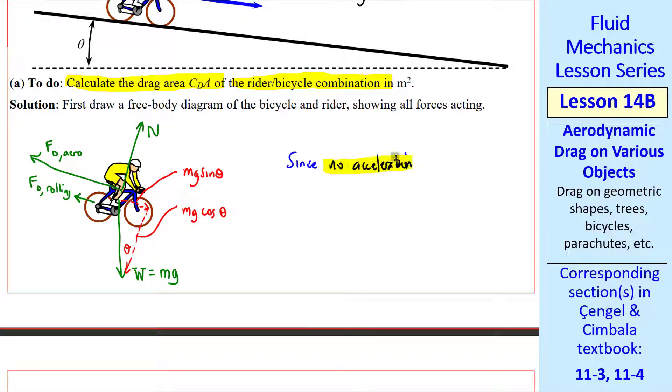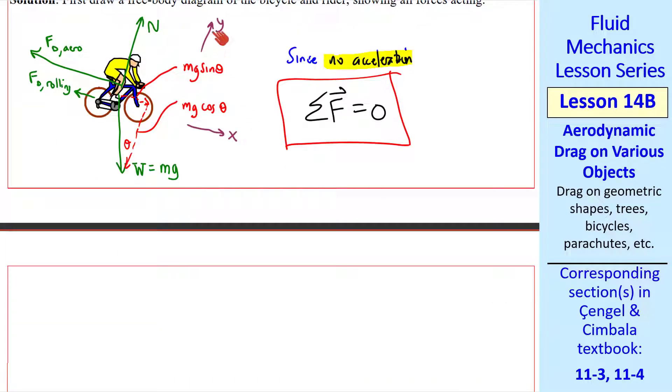Since there's no acceleration in this problem, Newton's second law tells us that sigma f equals zero. Let's let coordinate x be in the direction of travel, and we'll let y be normal to x. So Newton's equation splits up into sigma fx equals zero and sigma fy equals zero.